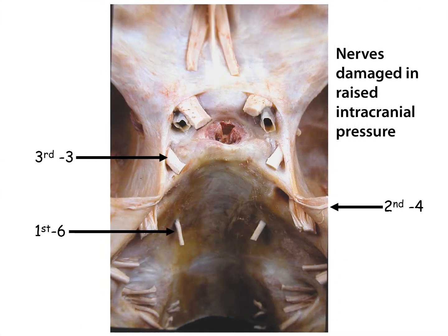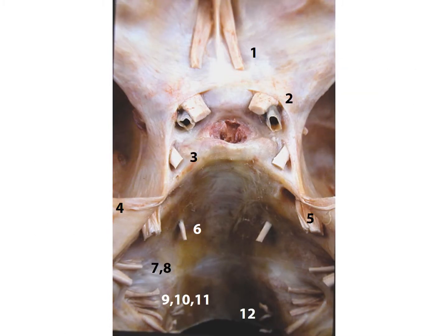The nerves damaged in raised intracranial pressure are firstly the sixth cranial nerve, passing upwards from the brainstem towards the cavernous sinus and therefore easily stretched, and then the fourth cranial nerve as it runs along the anterior edge of the tentorium cerebelli, also to enter the cavernous sinus, and finally the nerve that matters most in the unconscious patient, the oculomotor nerve, passing into the roof of the cavernous sinus.